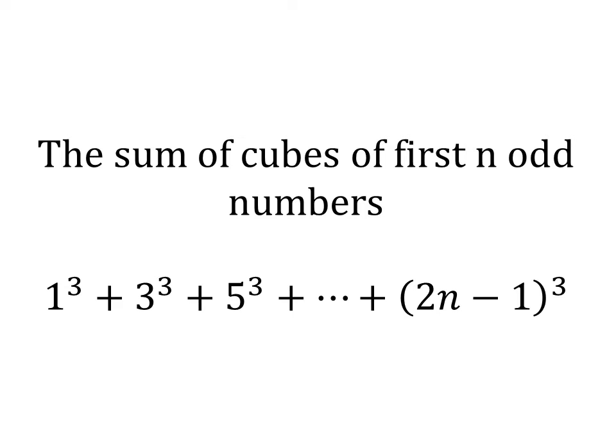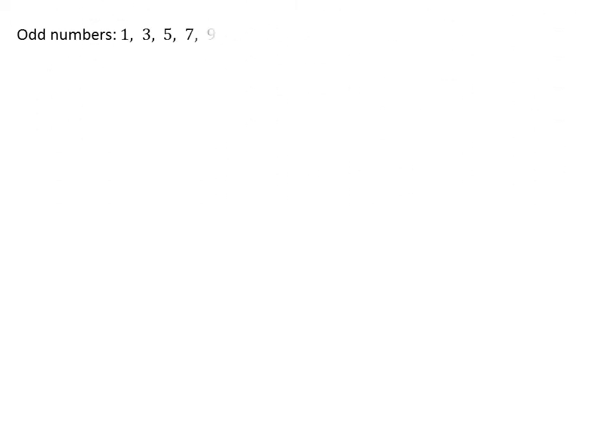In this video, we will learn to find the closed form of the sum of cubes of the first n odd natural numbers. The first 5 odd numbers are 1, 3, 5, 7, and 9.